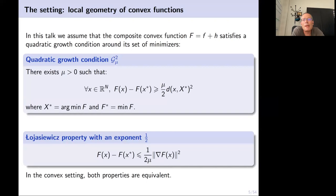In the convex setting, the quadratic growth condition is equivalent to the Łojasiewicz property with exponent 1/2: if F satisfies the quadratic growth condition, then F(x) − F(x*) is controlled by the norm of the gradient of f at x. The quadratic growth condition is geometrically more intuitive, but in the convex case these two conditions are completely equivalent.